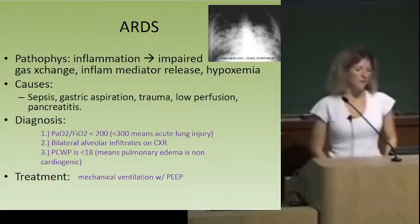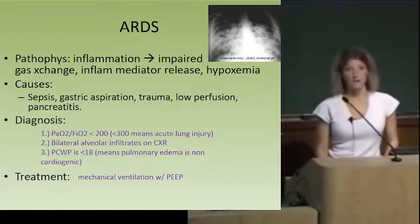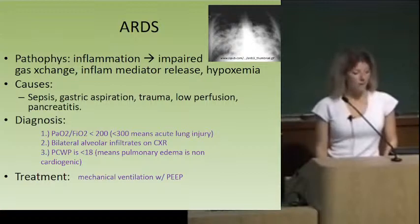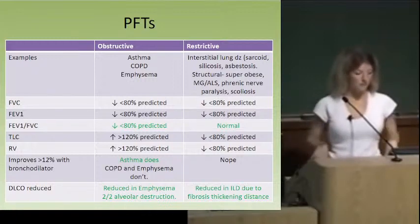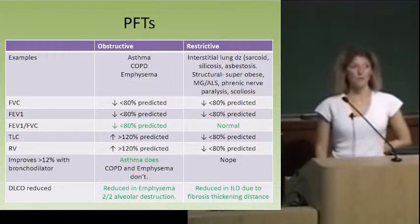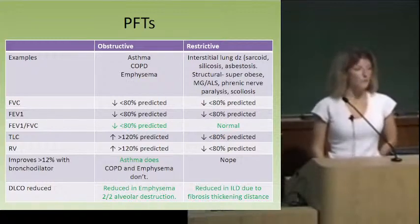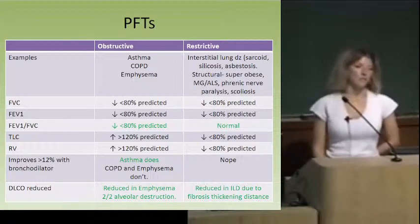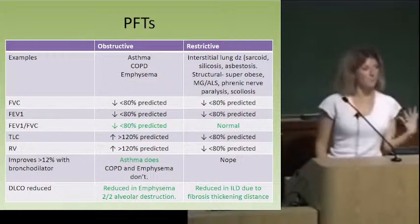For pulmonary function tests: to distinguish obstructive versus restrictive, look at the FEV1-to-FVC ratio. If that ratio is decreased — FEV1 disproportionately decreased compared to FVC — it's an obstructive process. If the ratio is normal and both FEV1 and FVC are decreased equally, it's restrictive. Bronchodilator response: a positive bronchodilator response is greater than 12% improvement in FEV1, which diagnoses asthma. COPD and emphysema lung volumes don't improve with bronchodilator. Diffusion of carbon monoxide is reduced in emphysema and in interstitial lung disease due to fibrosis.